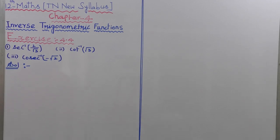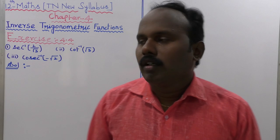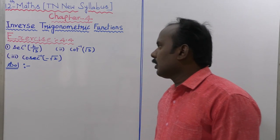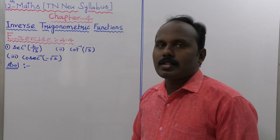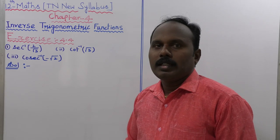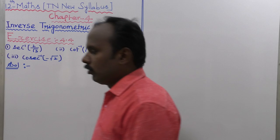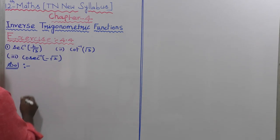Exercise 4.4. The first subdivision: secant inverse of 2 by root 3. Second subdivision: cot inverse of root 3. Third subdivision: cosecant inverse of minus root 2. We need to find the principal value for each.